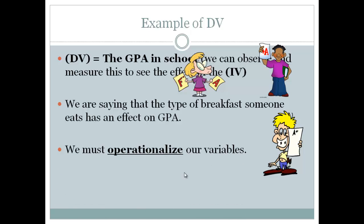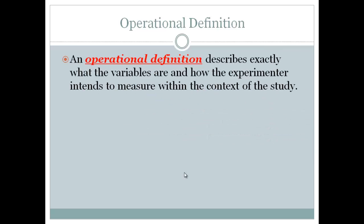And it's very important that we operationalize our variable too. This is a very important term to know. Think proceduralize. Operationalize is kind of proceduralizing our method of study and how we're going to put our experiment together. So an operational definition describes exactly what the variables are, how they're being measured in our study.